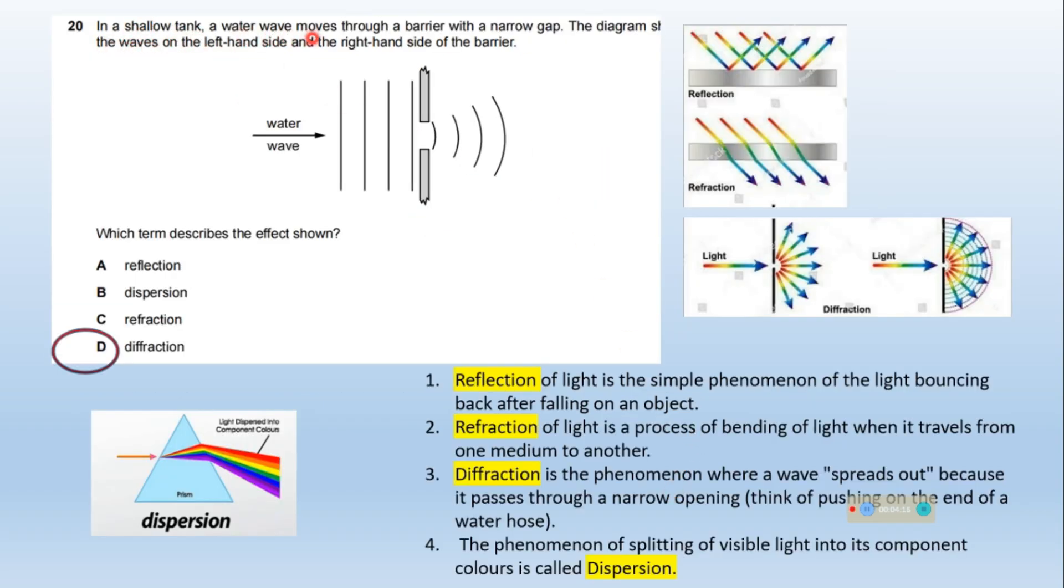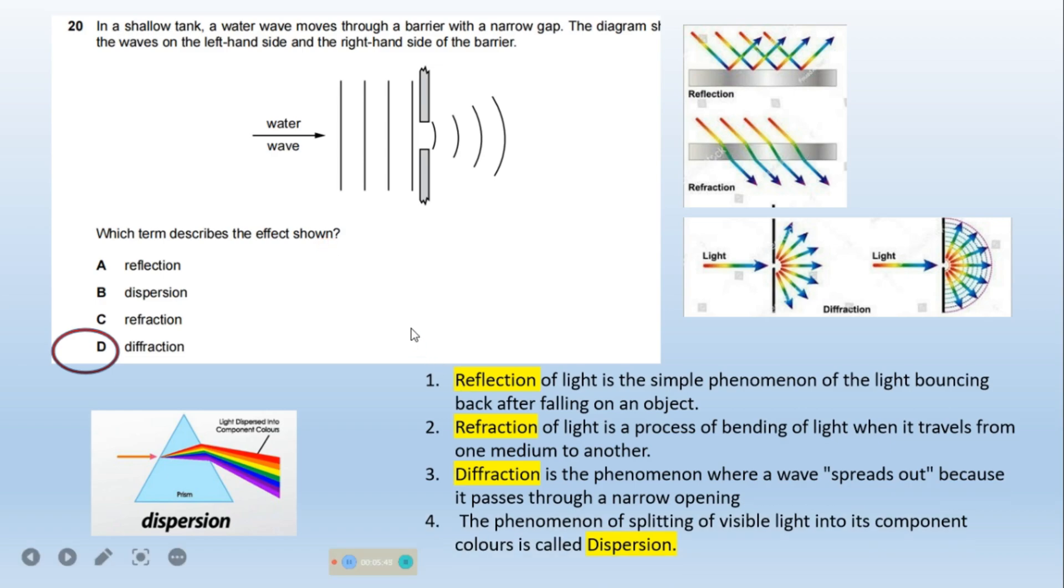In a shallow tank, a water wave moves through a barrier with a narrow gap. The diagram shows the waves on the left hand side and the right hand side of the barrier. Which term describes the effect shown? Let's check all the options given here. So first one A is Reflection. Reflection of light is the simple phenomenon of the light bouncing back after falling on an object. This shows reflection. Dispersion. The phenomenon of splitting of visible light into its component color is called dispersion.